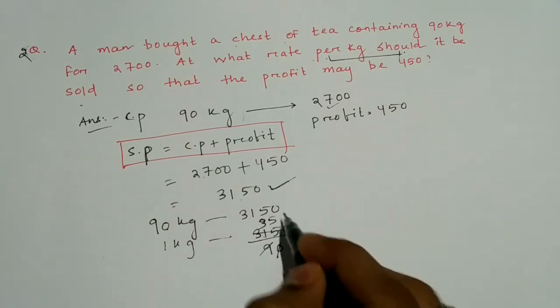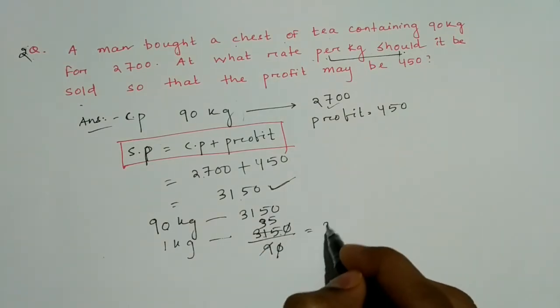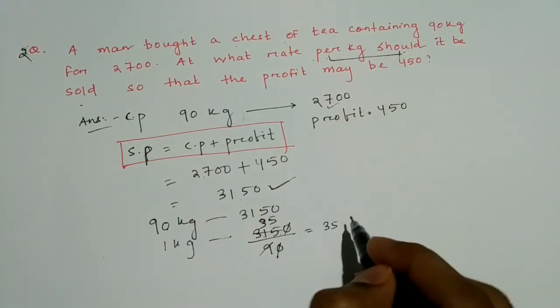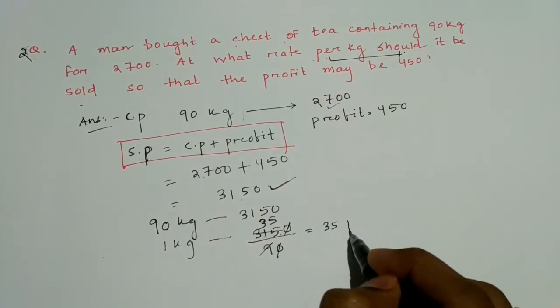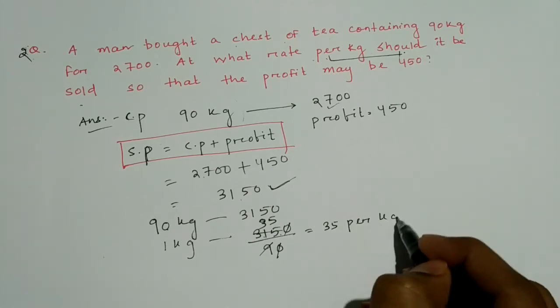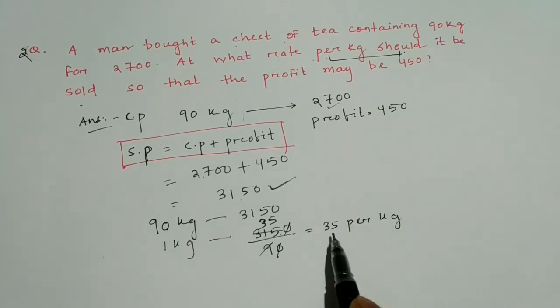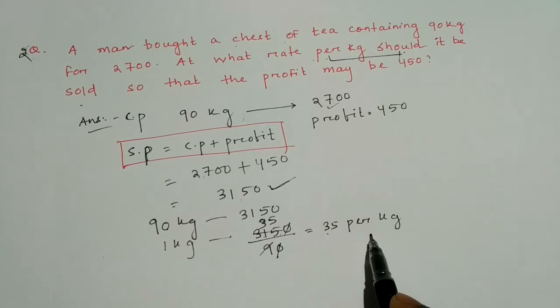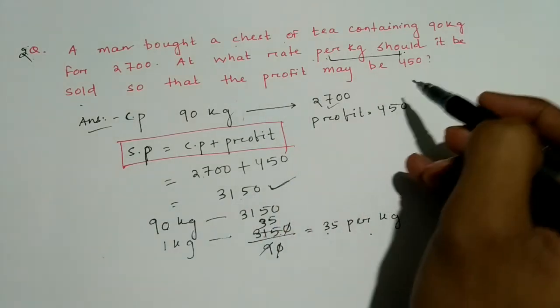So my answer is 35 rupees per kg. If sold at 35 per kg, the profit will be 450 rupees.